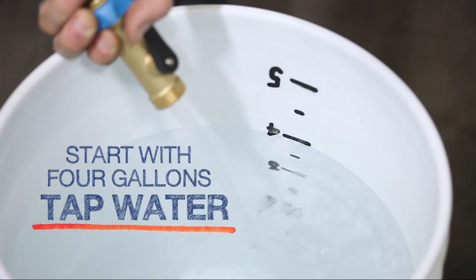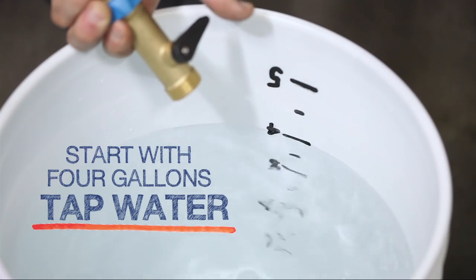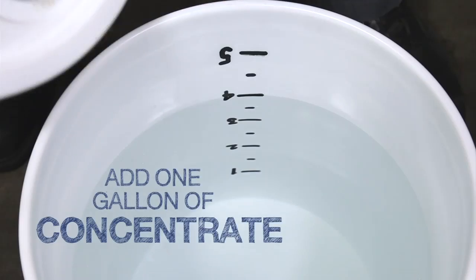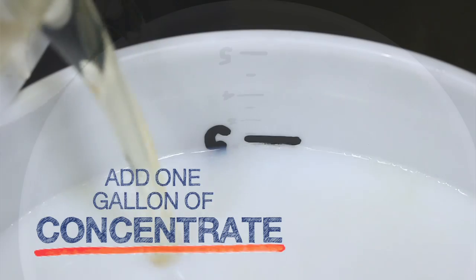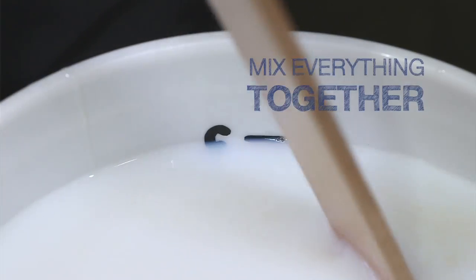Add the 4 gallons of tap water first to a graduated bucket, then add 1 gallon of concentrate. Mix all of it together.